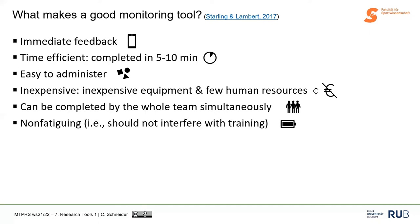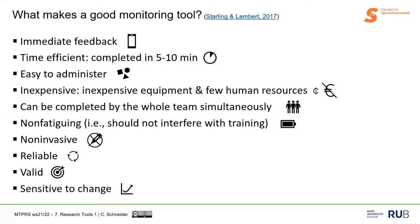The tools should try to be non-fatiguing. Often we're interested in measuring fatigue status or potential injury risk, so a measure that introduces extra fatigue is problematic. Measures should not interfere too much with training. Ideally measures are also non-invasive, although blood measures can provide very useful information. Tools should be reliable, valid, and sensitive to change — and although I said this at the beginning, all these things are context-, question-, and measure-dependent.